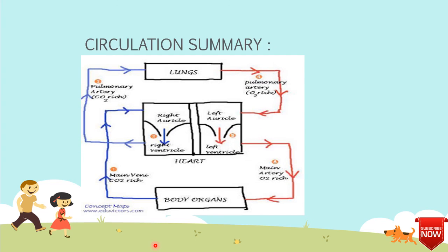Now, we are going to see the circulation summary — the diagram. First, from the lungs through the pulmonary artery, O2-rich blood enters the left atrium and goes to the left ventricle. After entering the left ventricle, it goes to the main artery carrying O2-rich blood to the body organs, where gas exchange occurs through the capillaries. Then it goes to the main vein as CO2-rich deoxygenated blood, flows to the right atrium and down to the right ventricle, goes to the pulmonary artery, and returns to the lungs where the carbon dioxide is expelled out.